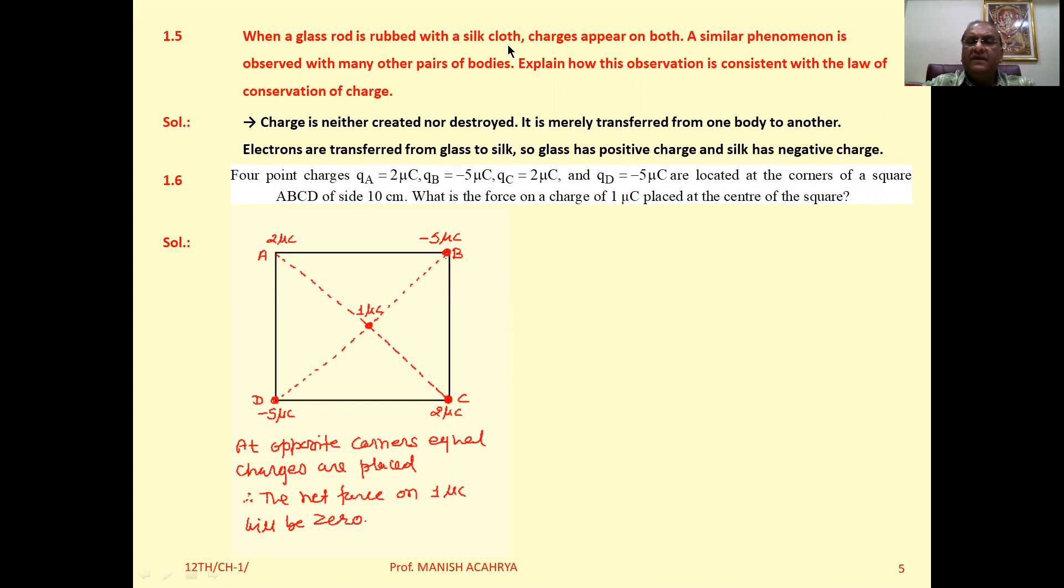the glass rod becomes positively charged and the silk cloth becomes negatively charged due to transfer of negatively charged particles - electrons - from glass rod to silk cloth. But here, the amount of positive charge deposited on the glass rod and the amount of negative charge deposited on silk cloth will be the same.